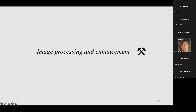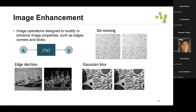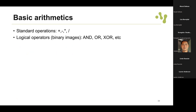We saw some examples of bioimage analysis, a brief introduction on digital images, and how to ensure quality. Now we will move to how to analyze images, starting with pre-processing and enhancement. An example could be noise removal - image operations are designed to modify or enhance properties such as edges, corners, and blobs. We can denoise an image, detect edges, or blur an image. These are examples of image enhancement and pre-processing, which can be performed in both the spatial domain and in the frequency domain.